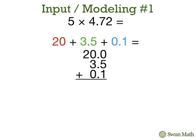We'll line up our decimal points and add. 5 tenths plus 1 tenth is 6 tenths. We have 3 ones and 2 tens. 5 times 4.72 is 23.6.